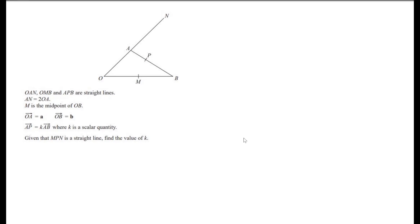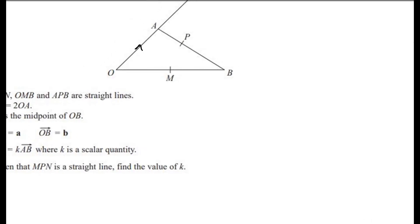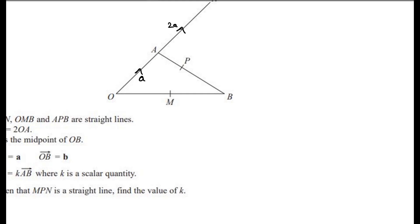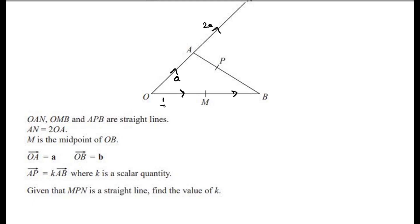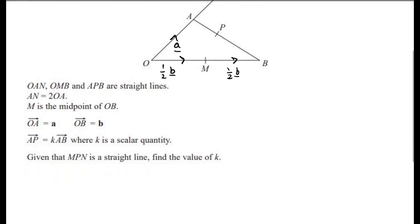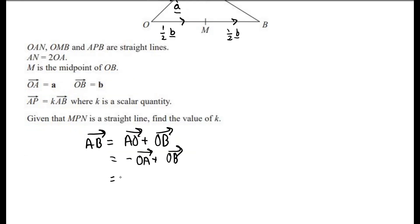For our fourth question, we have another vector question, slightly more challenging. OAN, OMB, and APB are straight lines. AN is 2 times OA. M is the midpoint of OB. The vector OA is A, the vector OB is B, and vector AP is equal to K times the vector AB. Given that MPN is a straight line, find the value of K. Since M is the midpoint of OB, we write OM and MB both as a half B. Vector AB is AO plus OB, or minus OA plus OB, which is minus A plus B. So AP equals K times (minus A plus B).